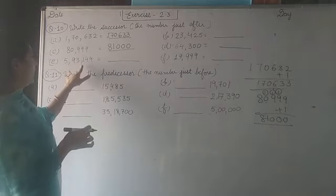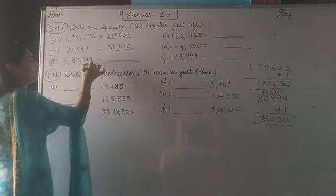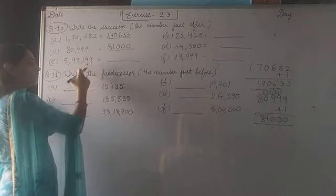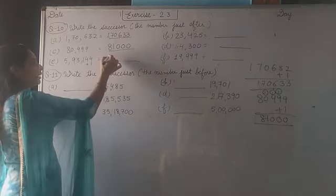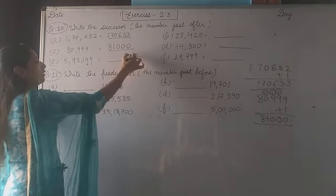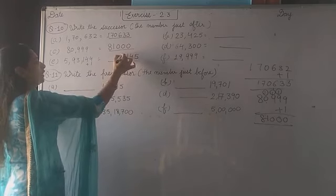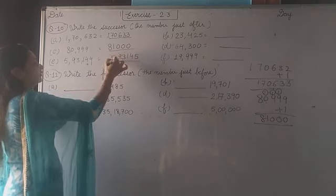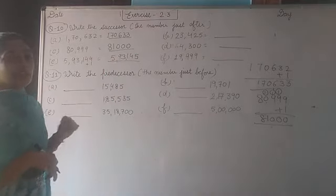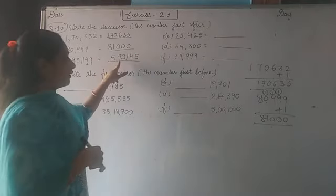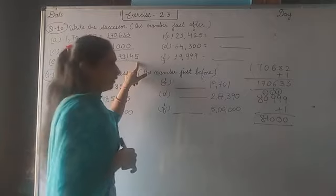See this question. Here is also same. If you add one here, 4 plus 1 is 5. No carry is going forward. So the remaining number will be same: 5, 4, 1, 3, 9, 5. The answer is five lakh ninety-three thousand one hundred forty-five.